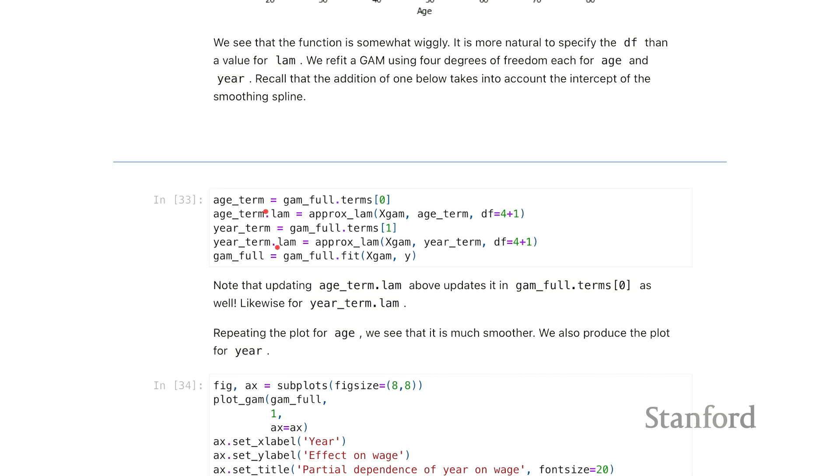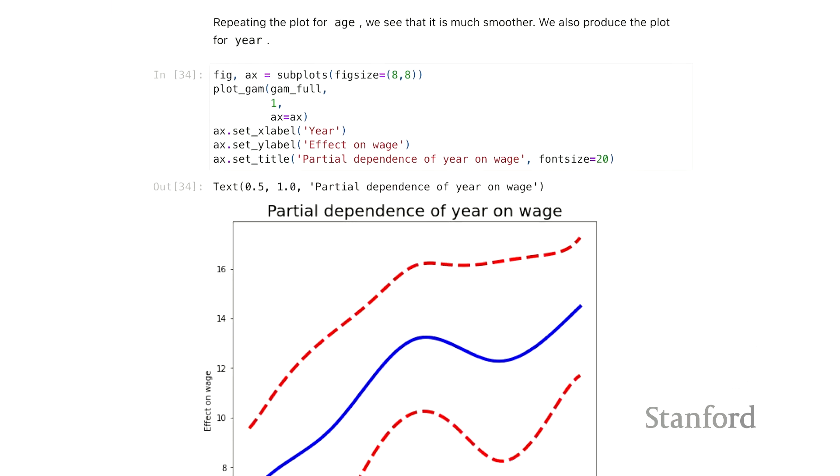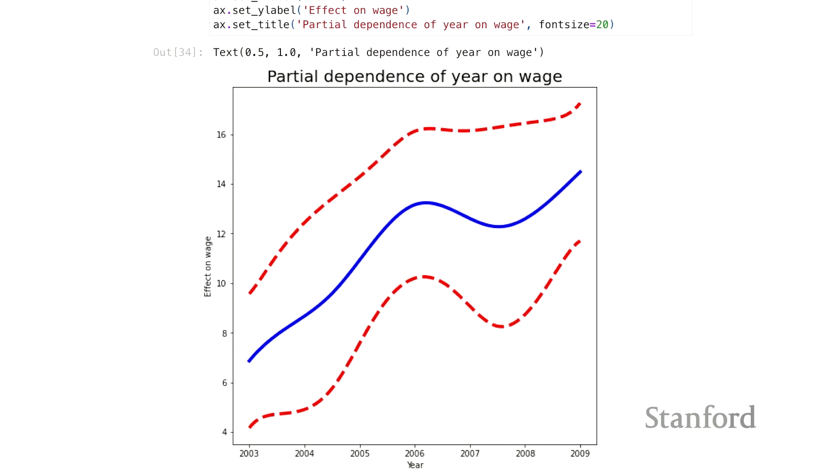So what we've done is we've modified the lambda values of our original GAM and refit it here. So now let's look at the partial dependence plot. And they are smoother than before. And so we've used roughly five degrees of freedom for each of these plots, each of these effects.